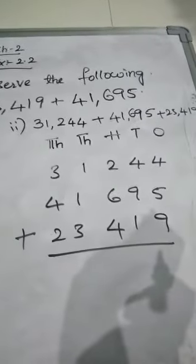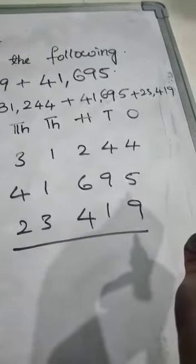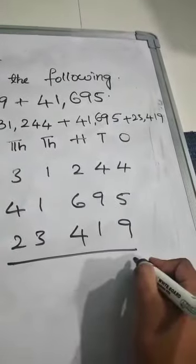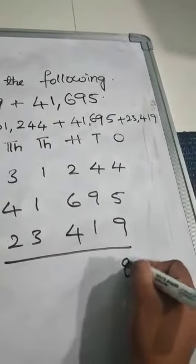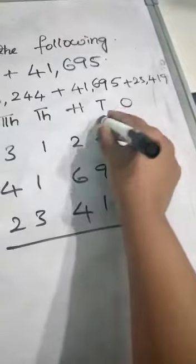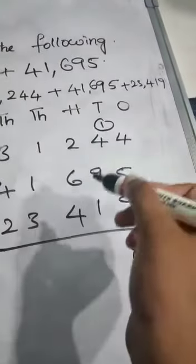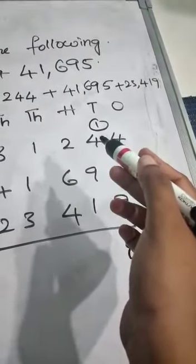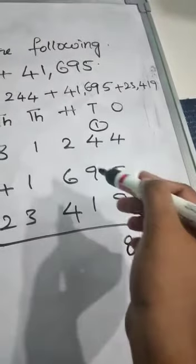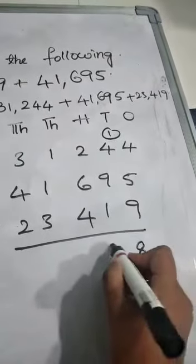So let us add this also. We will see what the number we will get. 9 plus 5 is 14. 14 plus 4, 18. So 8, 1 carry here. 9 plus 1, 10. 10 plus 5, 10 plus 4, 14. 14 plus 1, 15. So 5, 1 carry here.